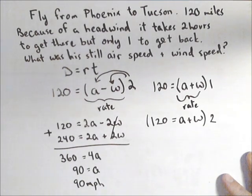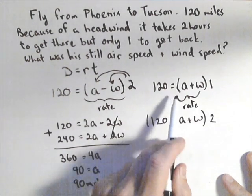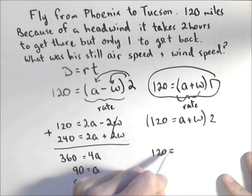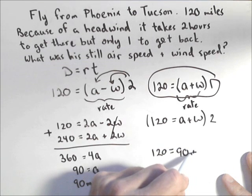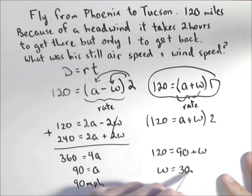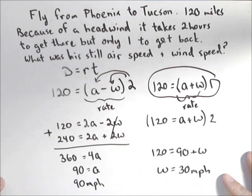Now, we have to find the wind speed. I'm going to use this equation right here. So I have 120 equals 90 plus W, and I get that W has to equal 30 miles per hour.